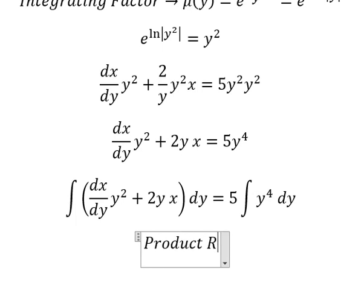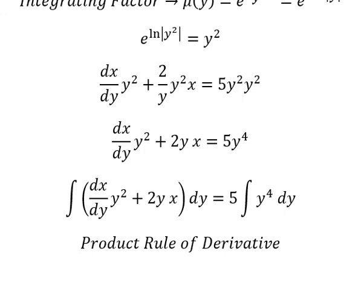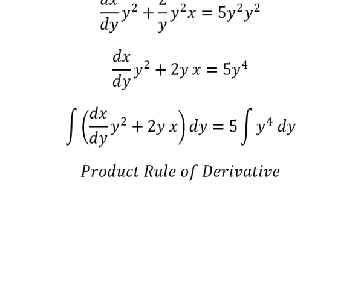Now we can apply the product rule of the derivative. The first derivative of y equals the first derivative of u multiplied by v plus the first derivative of v multiplied by u.